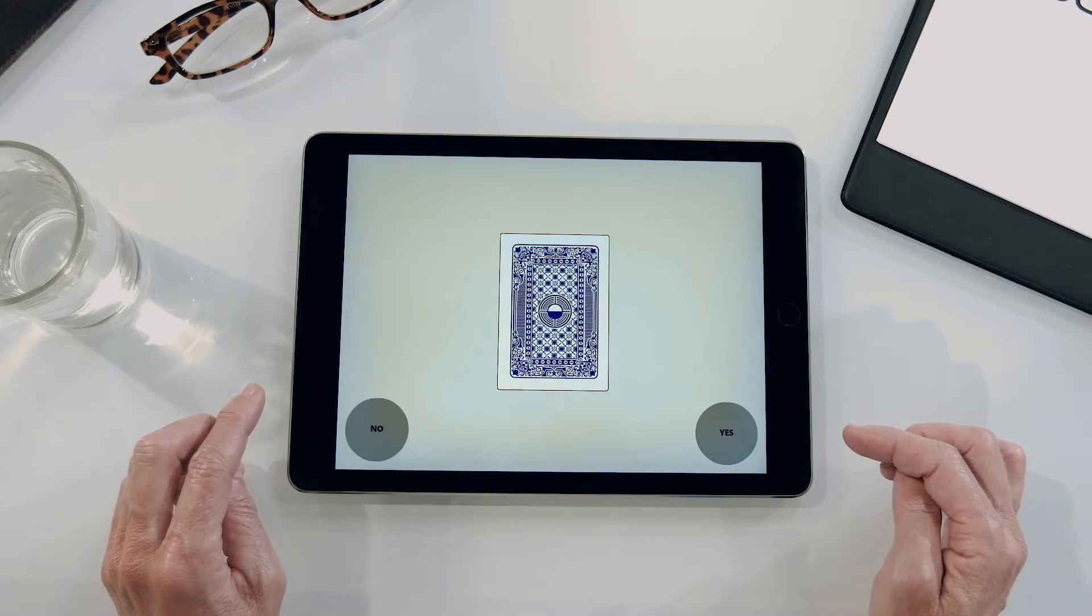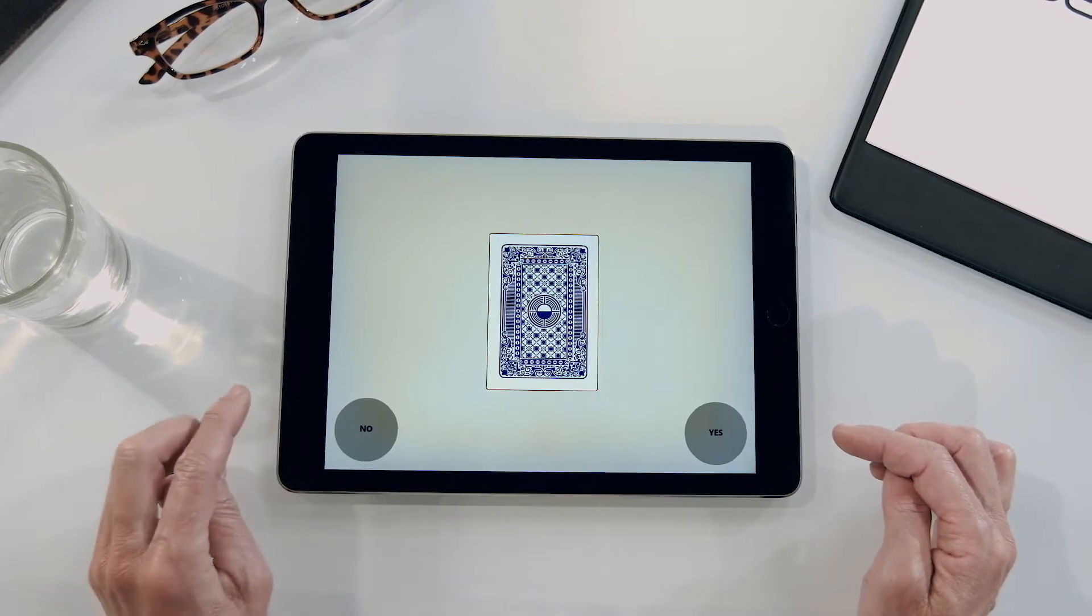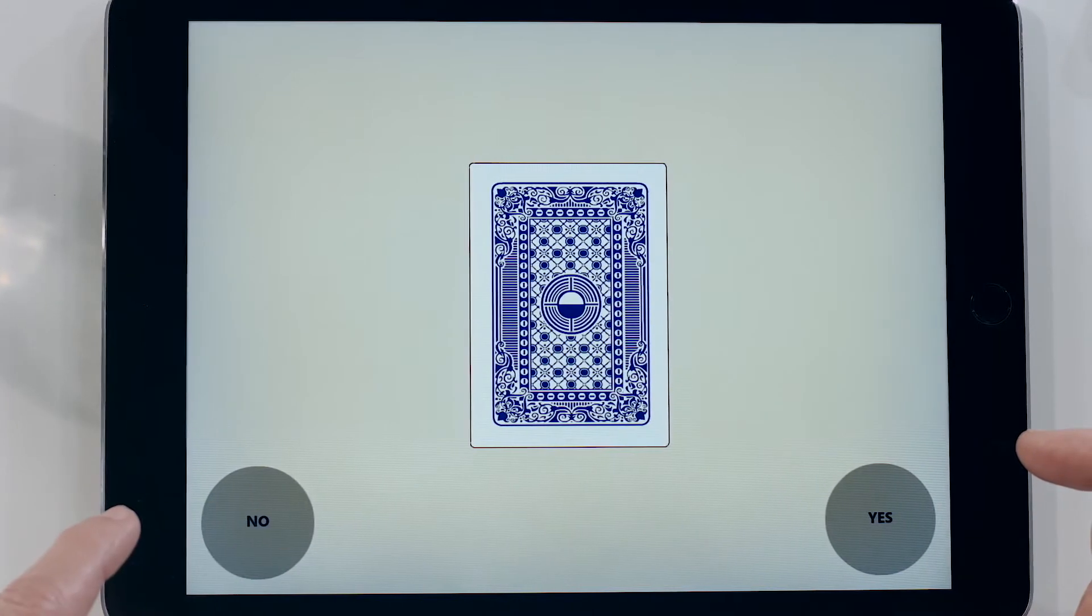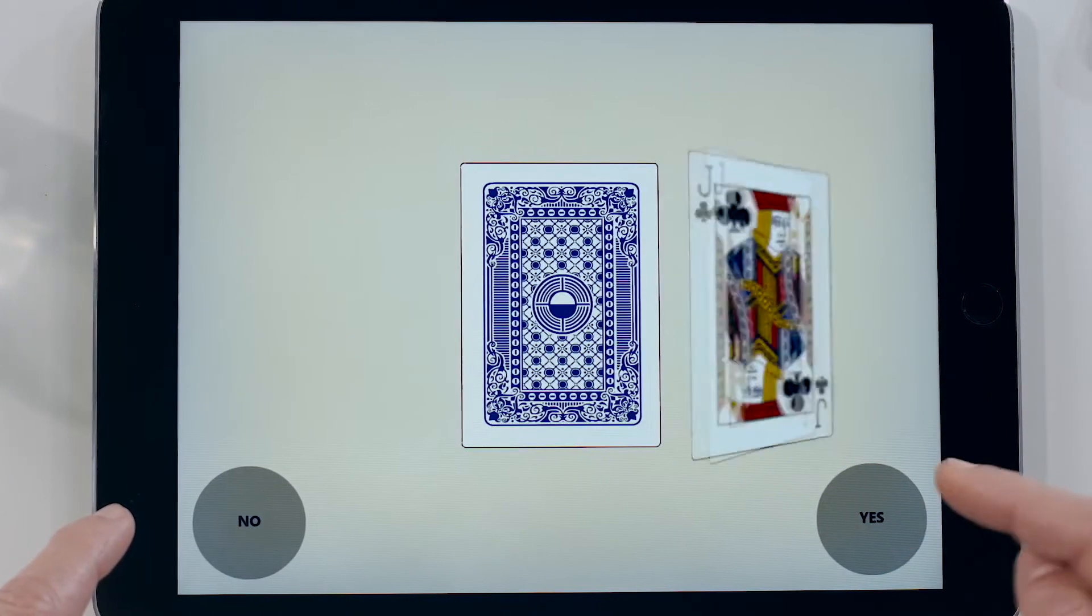The one card learning test measures visual learning. The card will flip over and the participant must decide whether or not the same card has been seen before in this test.